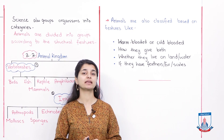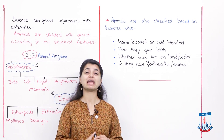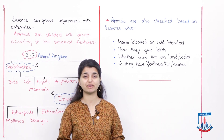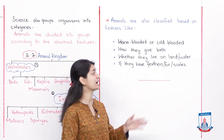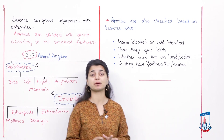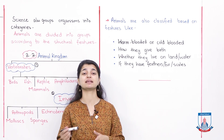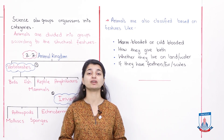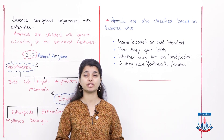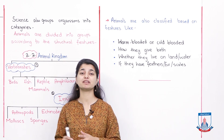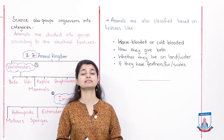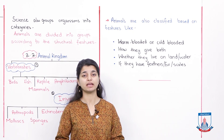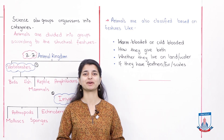So children, so far we have studied classification - why we classify in the animal kingdom and on what basis we classify them. In the next lecture, we will discuss examples from the book so that your concepts become clear. I would expect that you understand this chapter, and then we will go on to further details. Until then, take care of yourselves - looking forward to seeing you again.